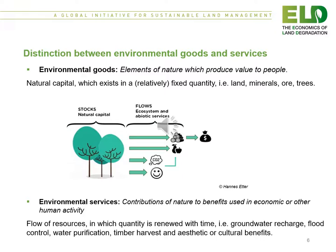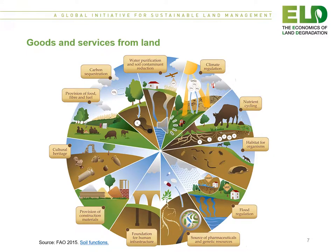We distinguish between environmental goods and environmental services. Environmental goods are elements of nature which produce value to people — natural capital which exists in a relatively fixed quantity, such as land, minerals, ores, and trees. Environmental services, on the other hand, are the contribution of nature to benefits used in economic or other human activity: a flow of resources in which quantity is renewed with time — for example, groundwater recharge, flood control, water purification, timber harvest, and aesthetic or cultural benefits.